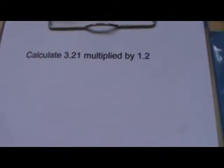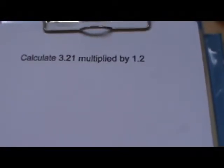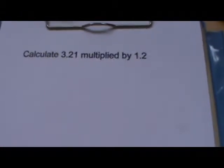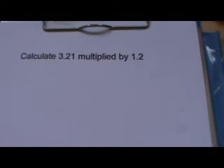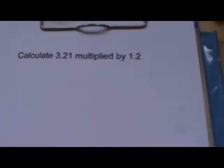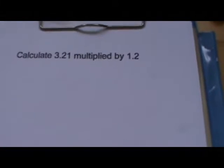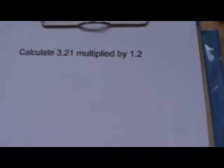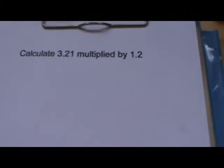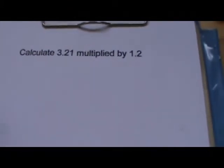So here's a much more difficult decimal multiplication. We've got 3.21 multiplied by 1.2. Again, it's a very good idea to do an approximation first. This sum is roughly 3 times 1, and we all know 3 times 1 is 3. So our answer should be a bit bigger than 3. Let's see if that's what we get.